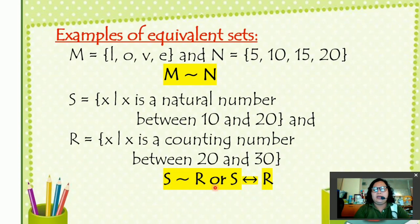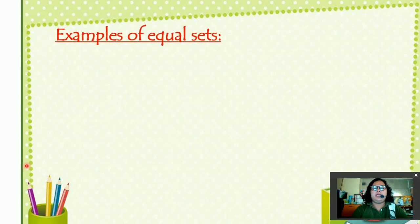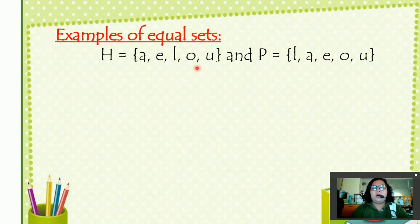Examples of equal sets. We have our set H with elements of A, E, L, O, U. And set P with elements of L, A, E, O, U. What did you notice? We have element A and we also have element A in set P. Same with E, also have E here. L, also have L, O, and then O, U, and then U. They have the same elements. At the same time, the number of elements of set H is 5. The number of elements of set P is also 5. So we can say that set H is equal to set P.